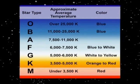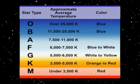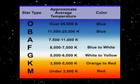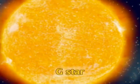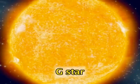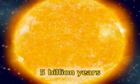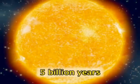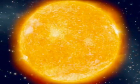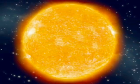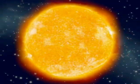Lastly, the least hot stars are the M type, with temperatures below 3,500 Kelvin, and are red in color. The Sun, which is the nearest star to our planet, is a G star and still has a remaining life of 5 billion years. Just imagine how hot the blue stars are compared to the Sun.